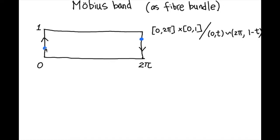So a point here, that is (0, t), is identified with the point here at coordinate (2π, 1 - t). The topology is the quotient topology. As a topological space, a Möbius band is something like this.